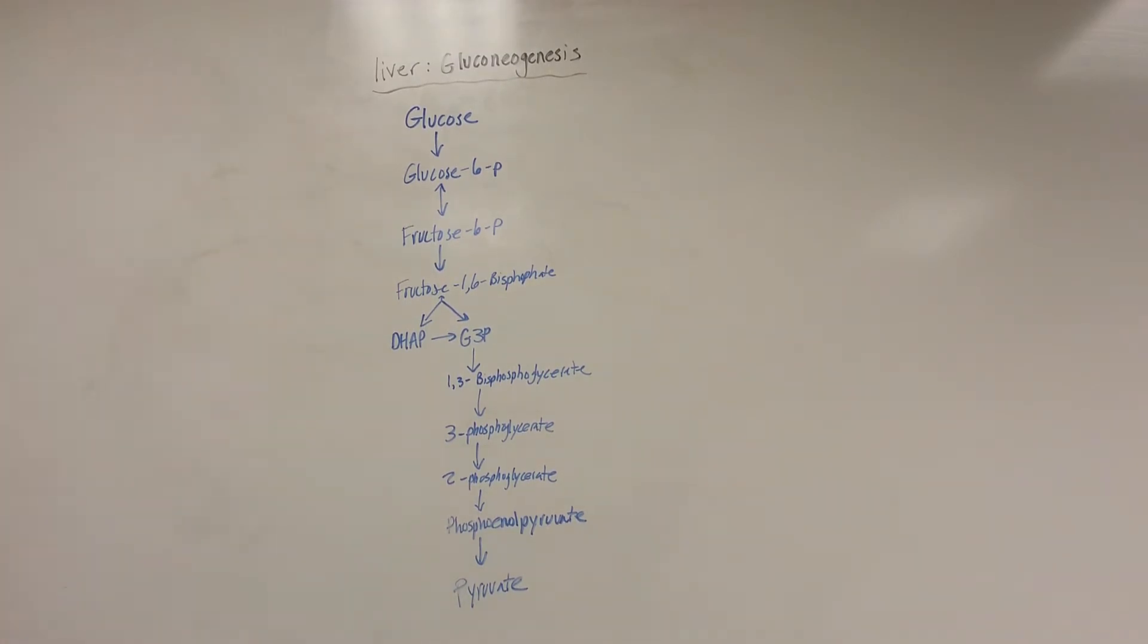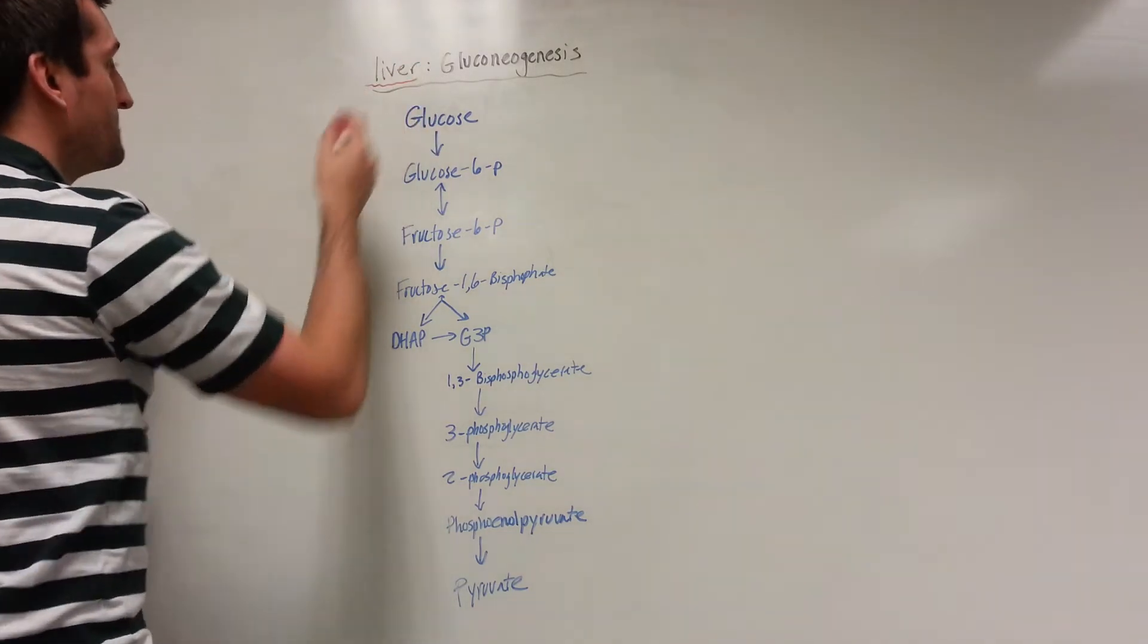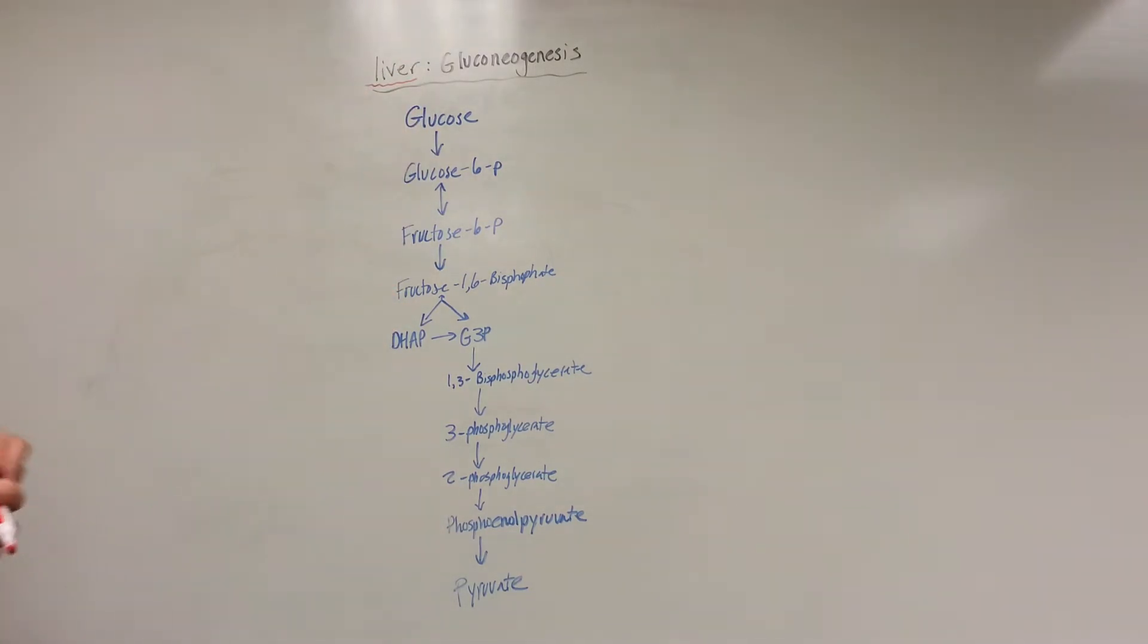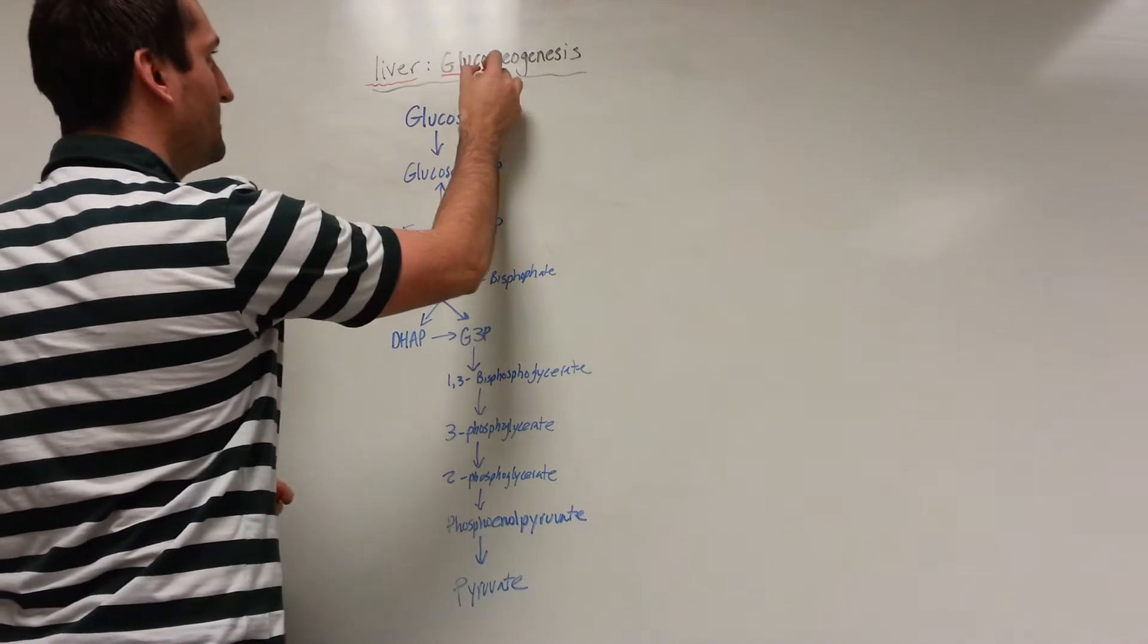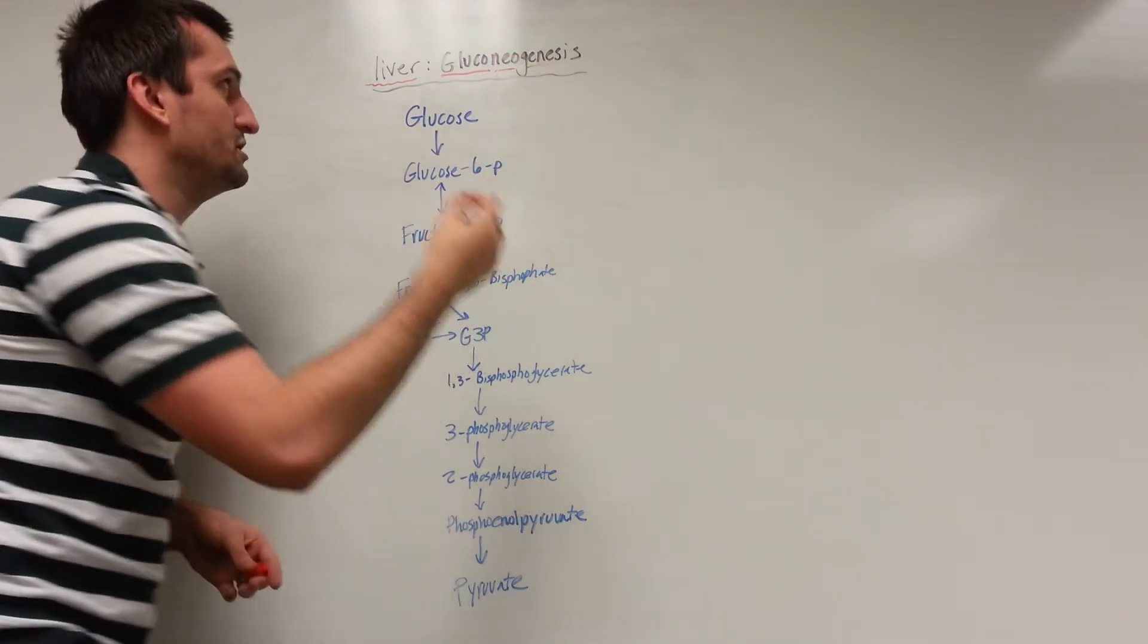Okay, today's topic will cover the concept of gluconeogenesis. Let's talk about the name first. This is going to be found primarily in the liver. The liver is going to make glucose for the body when the body is low on glucose.